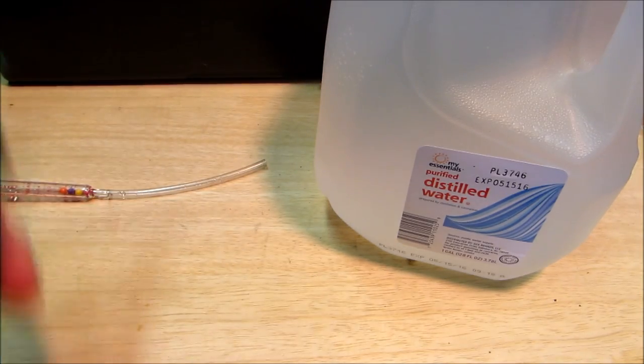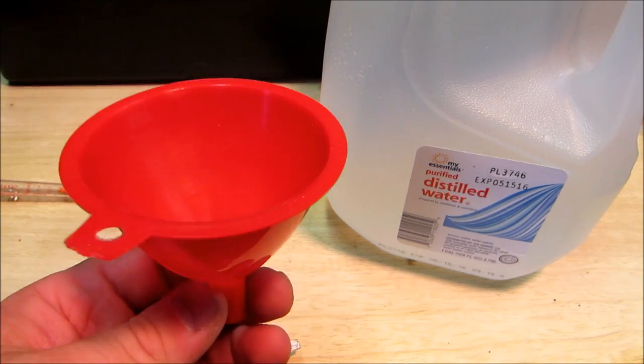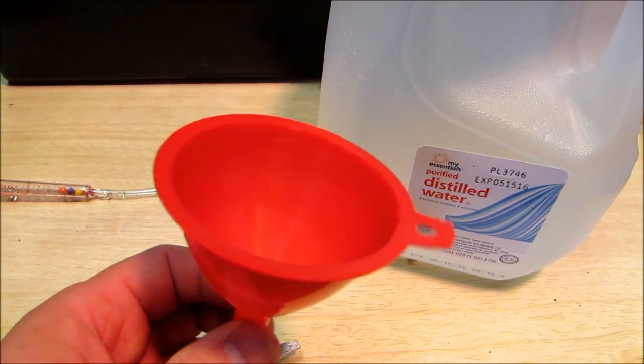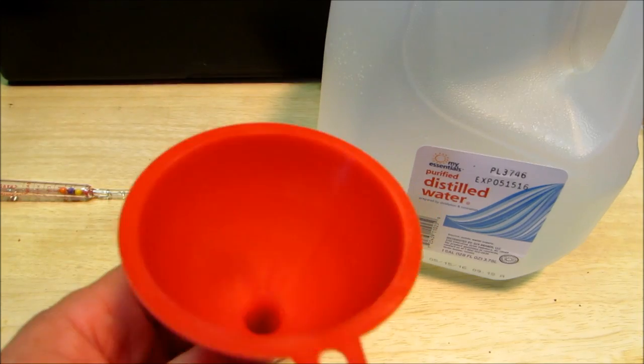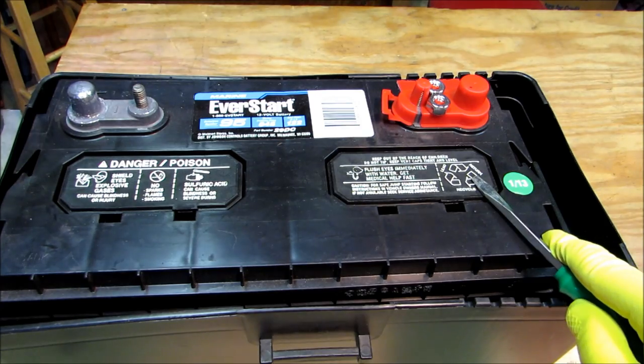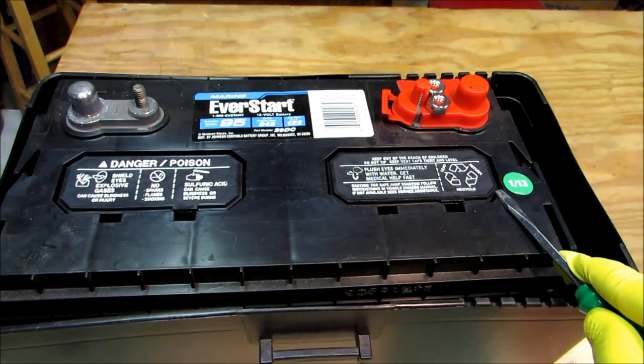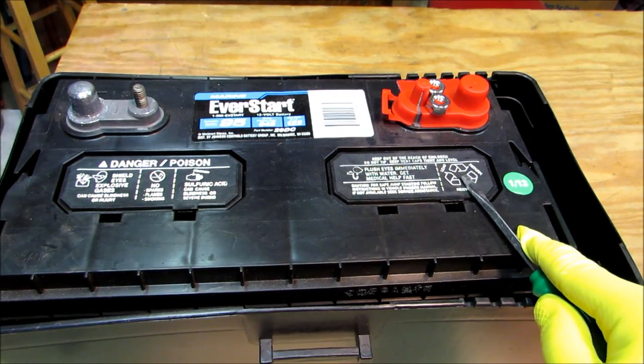And you're going to need a screwdriver to pop off the caps. Also, a funnel helps a lot if you're having to top off the acid in the battery. This helps with spills and stuff, and you don't want to overfill these things. Okay, one of the first things you've got to do is you've got to come in and pop the caps off. This is a 12-volt battery, so it should have six holes across. If it's a six-volt battery, it'll only have three.